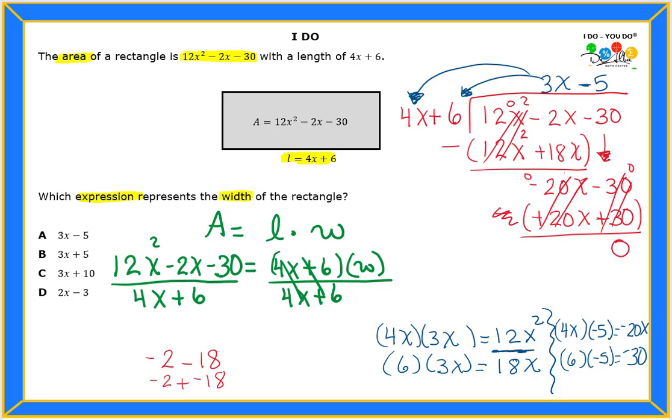So I was looking for the width, and the width will be 3x - 5, which is up here. So look at the answer choices, and I do see letter A like that. Very good.